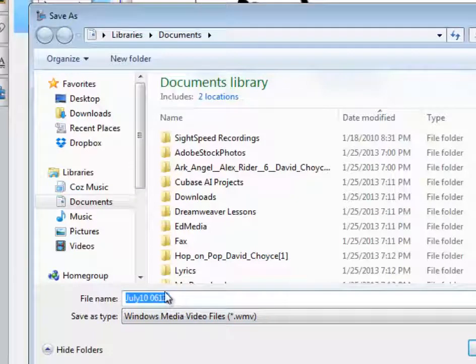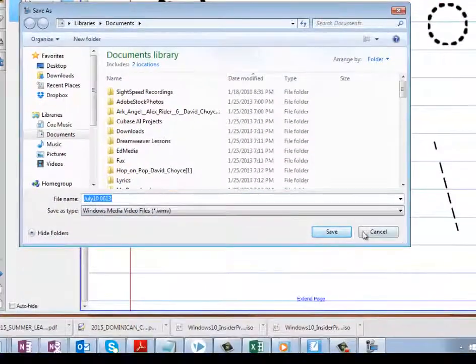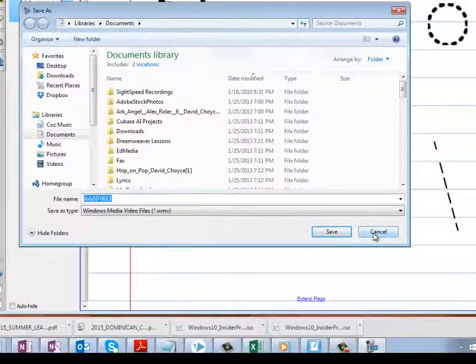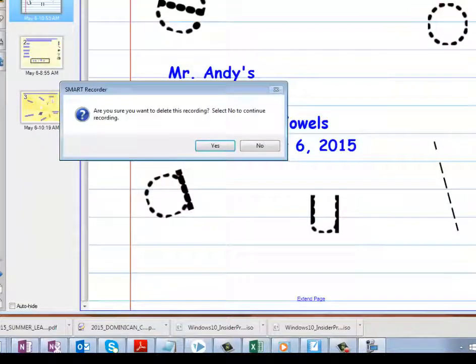And you can save it under any name you'd like. You can change the name. It automatically defaults to the date. That's how you can do it. And if you want to upload that to YouTube, I can show you another video on how to upload to YouTube or do video editing. But that's it for now. I want to keep it short.